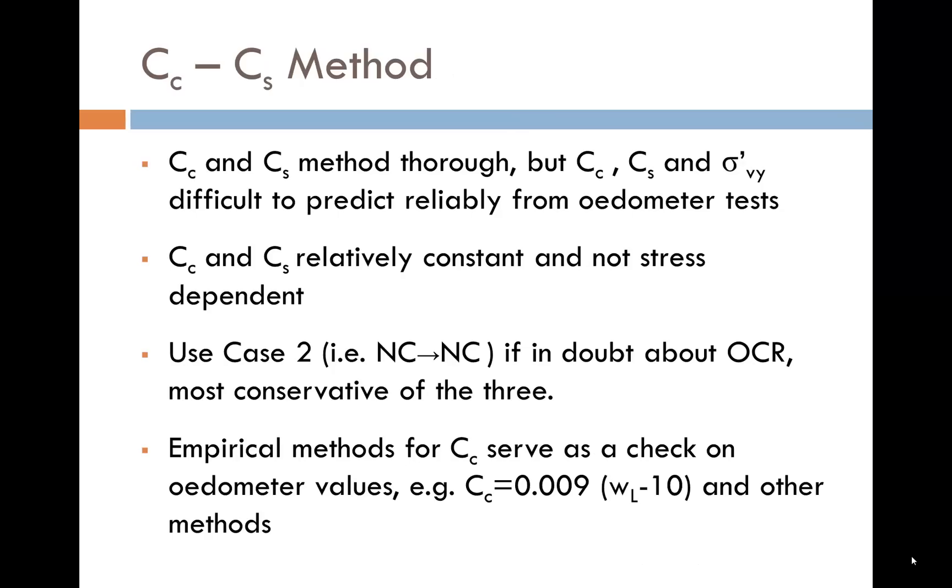Some general comments about this method. The method is thorough, but Cc, Cs, and σ'vy can be difficult to predict reliably from oedometer tests. Cc and Cs are relatively constant and not stress dependent. Use case 2, in other words the case where you start normally consolidated and finish normally consolidated, if at all in doubt about OCR, as this is the most conservative approach of the three. Empirical methods for Cc serve as a check on oedometer values.